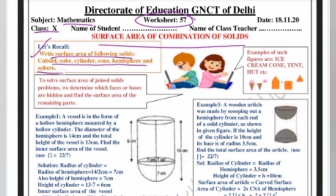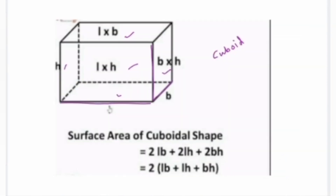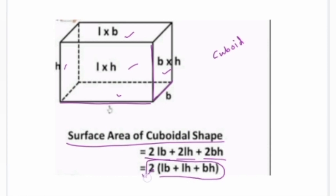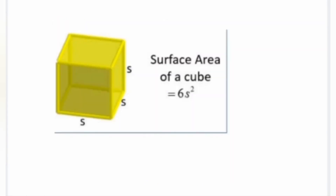The solids are: cuboid, cube, cylinder, cone, hemisphere, and sphere. The surface area formula for a cuboid is 2lb + 2lh + 2bh. If we take 2 common, the formula becomes 2 into bracket (l×b + l×h + b×h), where l is the length, b is the width, and h is the height.